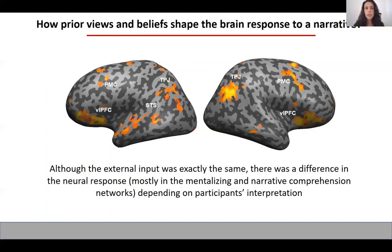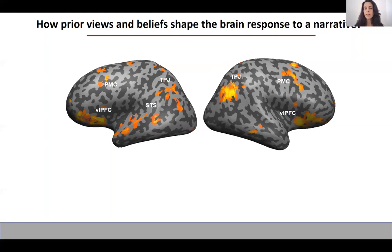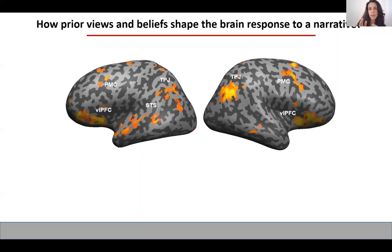I would like to finish with a technical note that, at least in this project, the Euclidean distance classification method was more sensitive to differences in brain response between the two groups than testing for differences using intersubject correlation within a group and comparing it with intersubject correlation between groups. I think the reason is that the Euclidean distance classification method is sensitive to changes in amplitude, and not just sensitive to the direction of the response as in intersubject correlation.